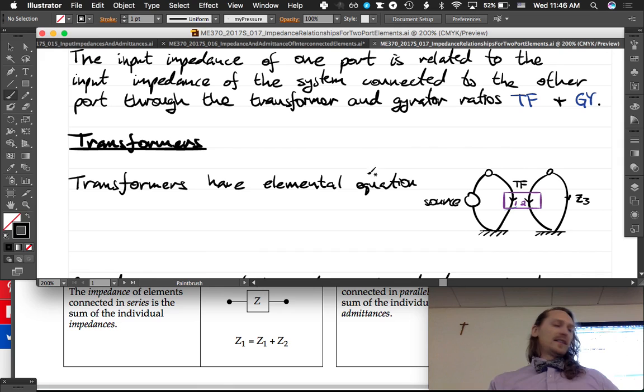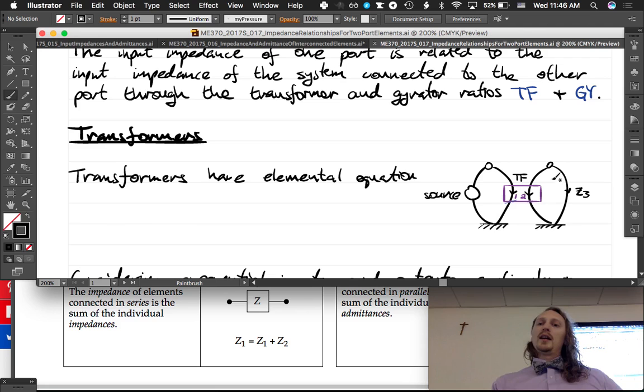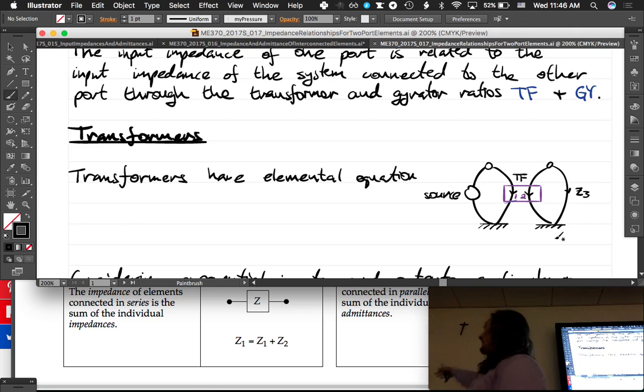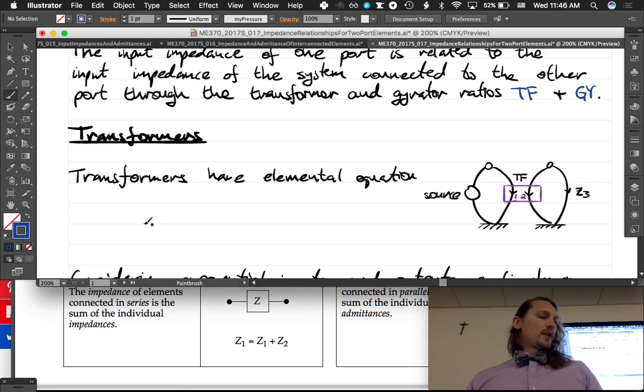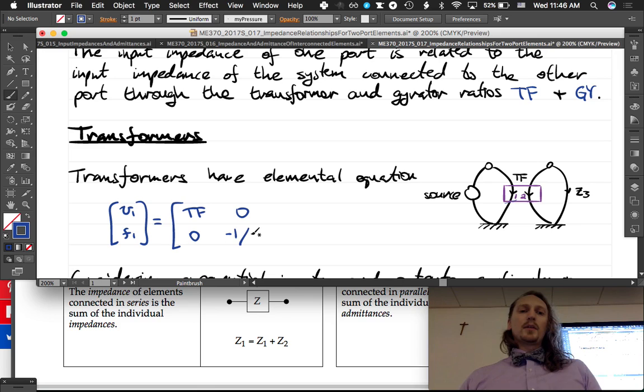Say you had a source connected to a transformer and then you had an impedance out here. You could represent all of an entire system by z3, right? You could write an equivalent impedance for the whole thing. So let's write the elemental equation for this. Do you guys remember the elemental equation, the general one where we just have the generalized variables? So we have v1, f1, the transformer ratio here and then the negative reciprocal of the transformer ratio, and then v2 and f2.